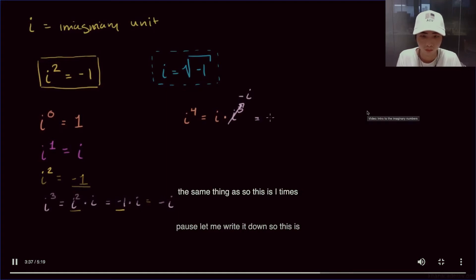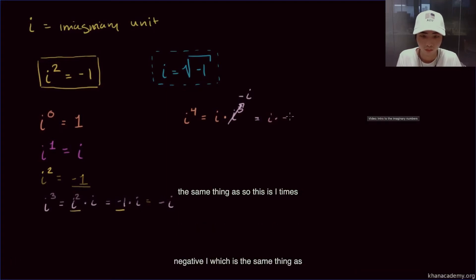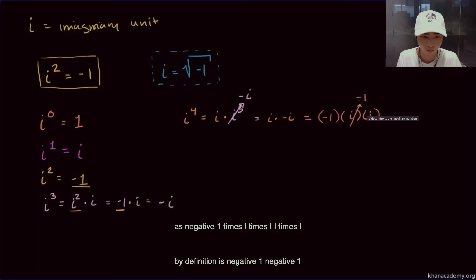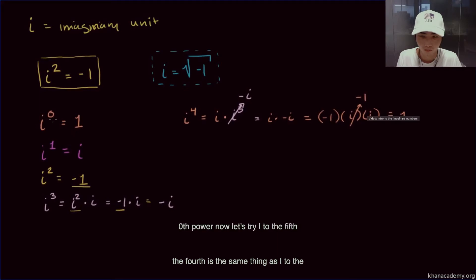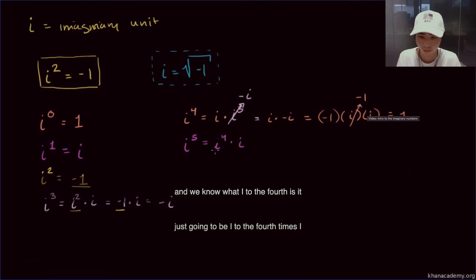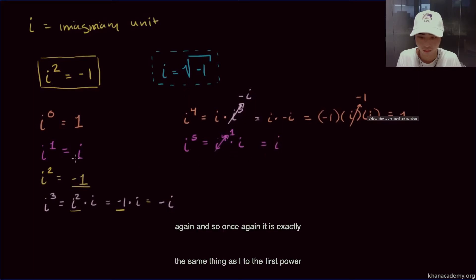So i to the fourth is the same thing as i to the zero power — both equal 1. i to the fifth power is i to the fourth times i, which is 1 times i, just i again — exactly the same as i to the first power. i to the sixth power is i times i to the fifth, and i to the fifth is i, so i times i equals negative 1 by definition. The cycle keeps going: i to the seventh is i times i to the sixth, which is i times negative 1, giving negative i.